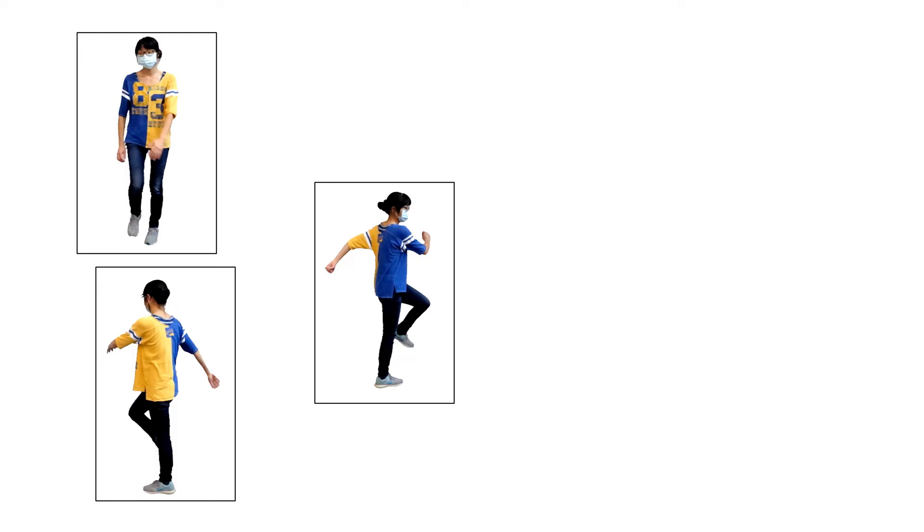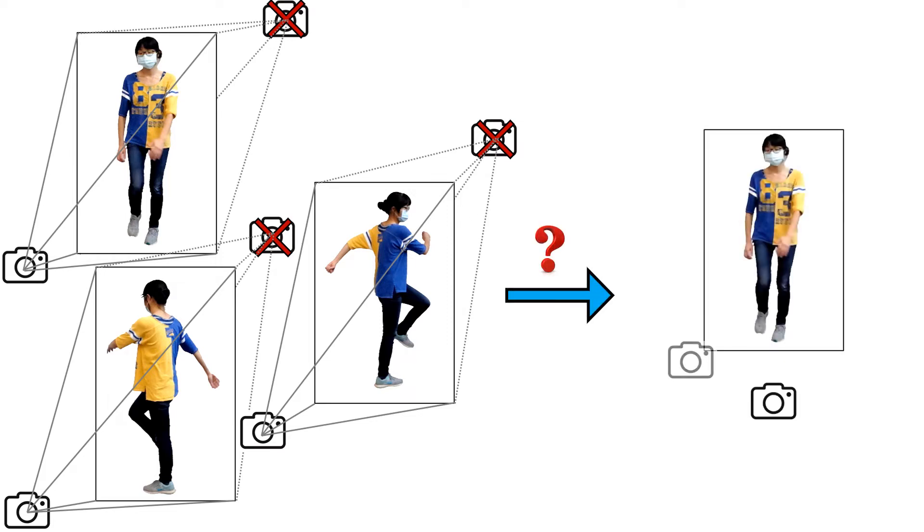The challenge is limited observations. In a monocular video, for each frame, only half body of a subject can be seen by one camera. The other half is completely unobserved. However, in our scenario, we need a subject to be viewed in all directions.